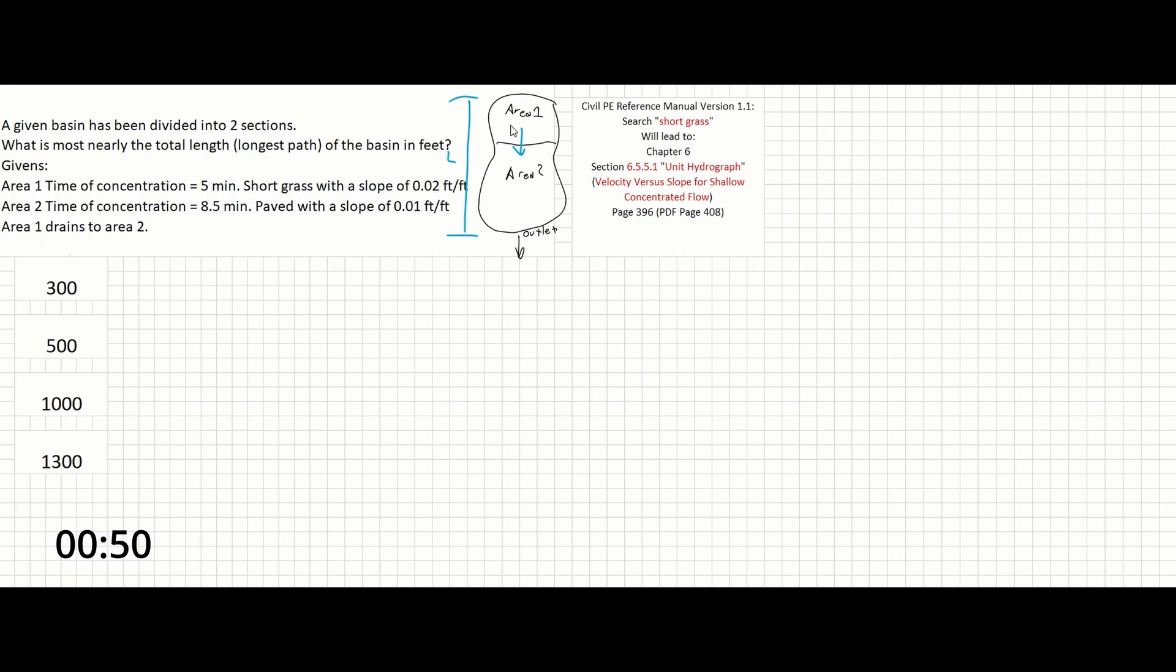Why would I know to use velocity and how would I find it? This problem provides the slope and basin characteristics of each area. There exists a graph on page 396 that can be used to find velocity. I realize using this graph isn't obvious. If needed on the exam, the problem might call out this graph or provide it. But just in case it doesn't, it's good to know it exists in the reference manual and how to use it. That's the point of this problem.